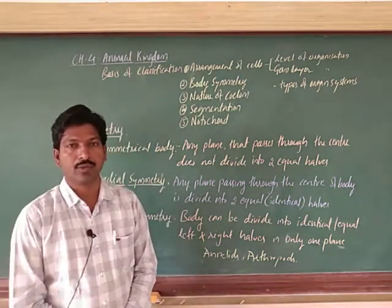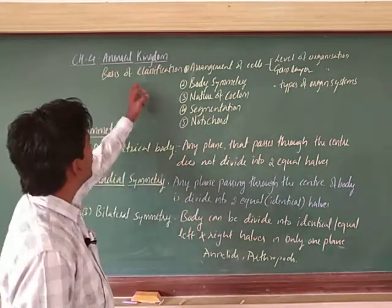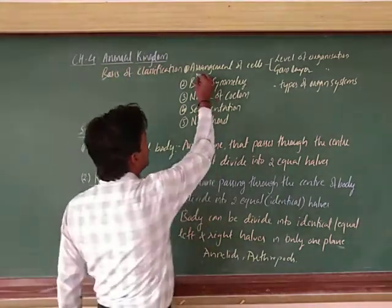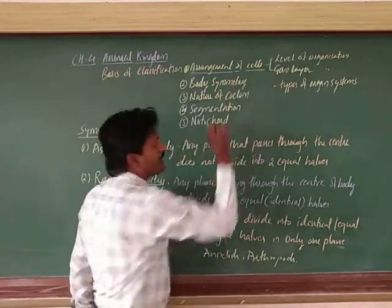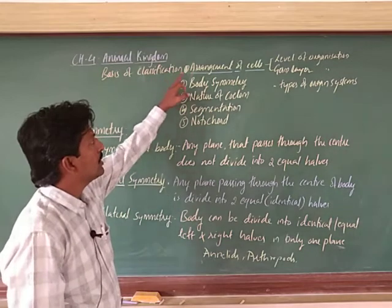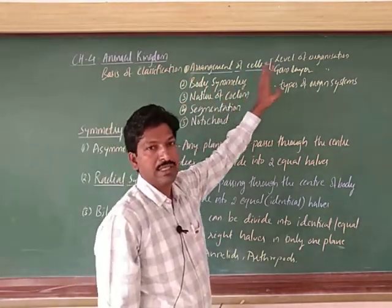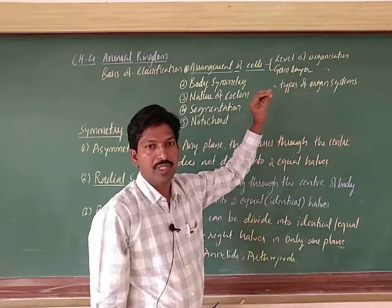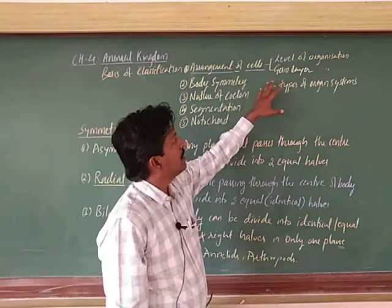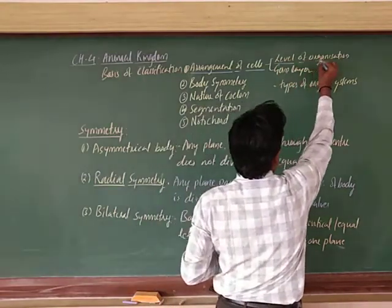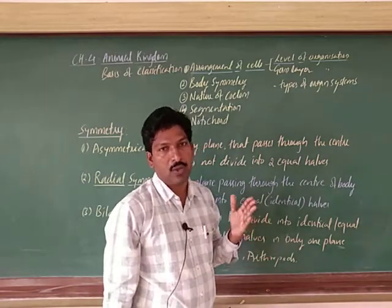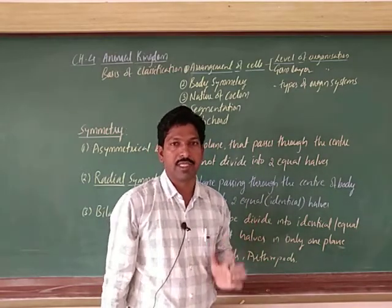Good morning students. Today we are going to discuss the next bit of the basis of classification in chapter 4, that is animal kingdom. In the previous video, we discussed regarding the arrangement of cells, which is one of the criteria for the classification of animals. We also discussed the level of organization - cellular level, tissue level, organ level, and organ system level of organization.